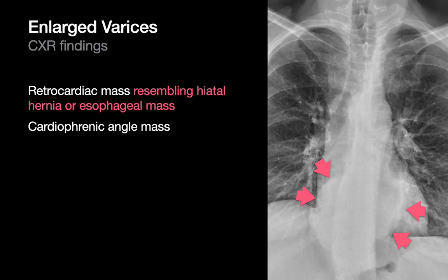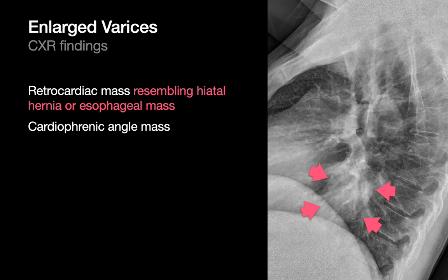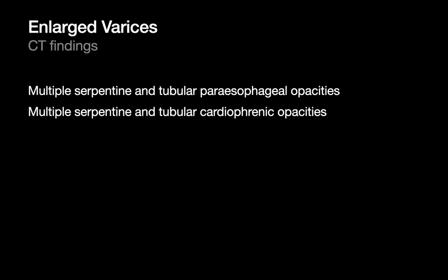Enlarged varices are another central venous disorder. When varices become very large, they can manifest as a retrocardiac mediastinal mass on chest x-ray that resembles a hiatal hernia on both frontal and lateral images. However, the diagnosis of enlarged varices on CT is relatively trivial, especially if you've given the patient intravenous contrast. Good places to look for varices are around the lower esophagus and near the cardiophrenic angles.